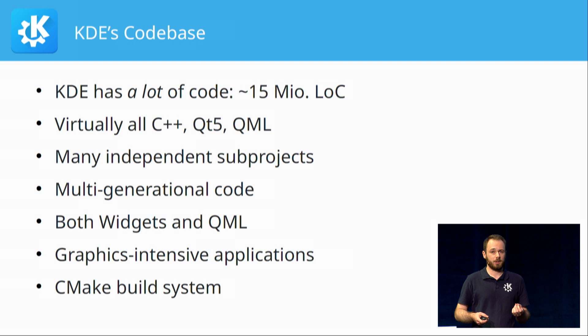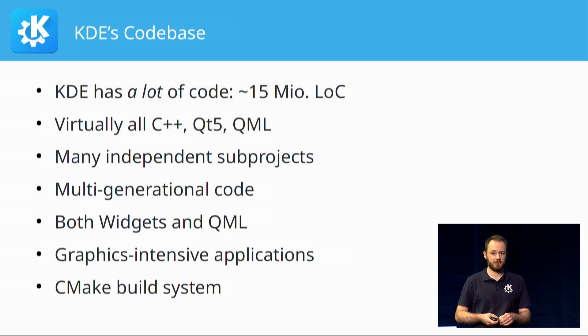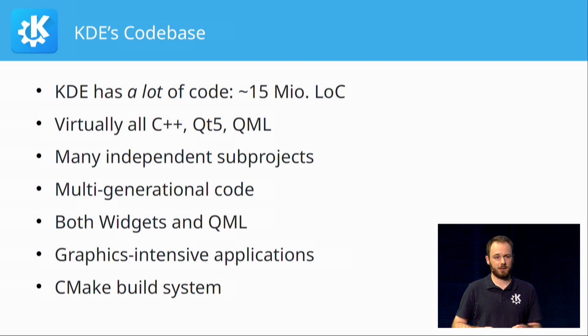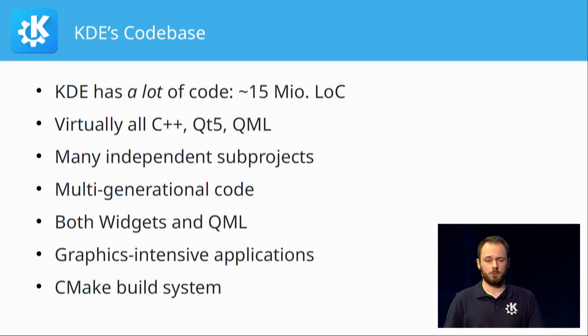Some of our applications are graphics-intensive in the sense that they do a lot of custom low-level rendering, mostly using OpenGL. For example, KWin, our window manager and Wayland compositor, does a lot of low-level graphics and painting code for compositing and getting stuff on your display. And apps like Krita, the painting program, obviously do a lot of custom painting.